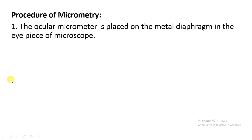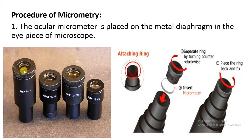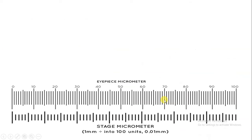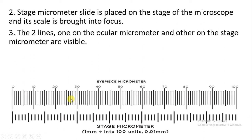Next, what is the procedure of micrometry? First of all, we do require the ocular micrometer. It is placed on the metal diaphragm in the eyepiece of the microscope. The eyepiece is opened, and the ocular micrometer is inserted. Then the opening is closed again, and in this way the scale is inserted and visible inside the eyepiece. Second step — the stage micrometer slide is placed on the stage of the microscope and the scale is brought into focus. Then the lines of the ocular micrometer and stage micrometer need to be coincided — both lines should be visible.